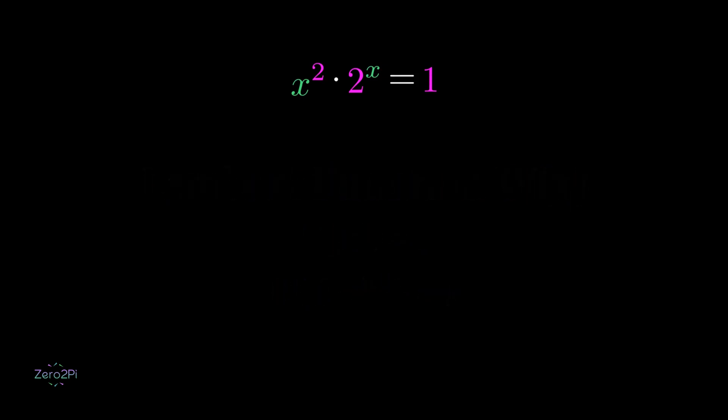And now, we use our original equation combined with the property of Euler's number. Our equation now becomes x squared multiplied by e to the power of x natural log of 2 equal to 1.